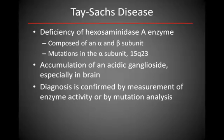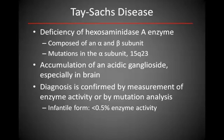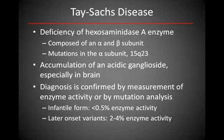In the severe infantile form of Tay-Sachs disease, which is the most common, there is less than 0.5% enzymatic activity. However, there are less severe types of Tay-Sachs disease with higher, but still severely reduced, enzyme activity.